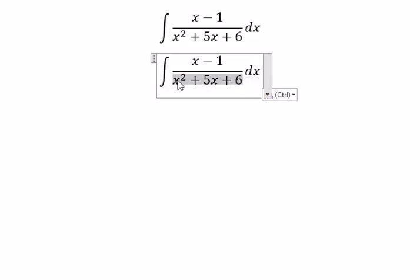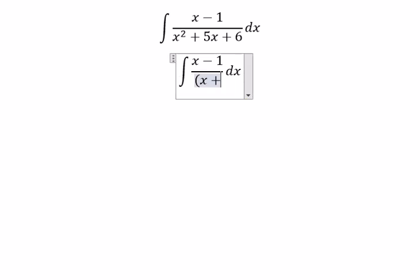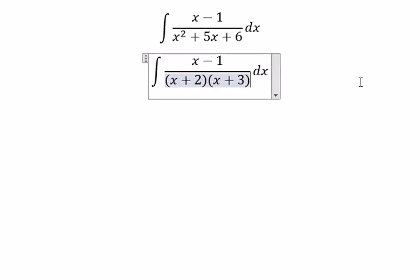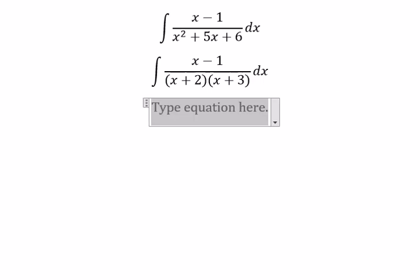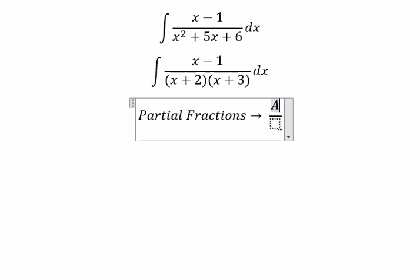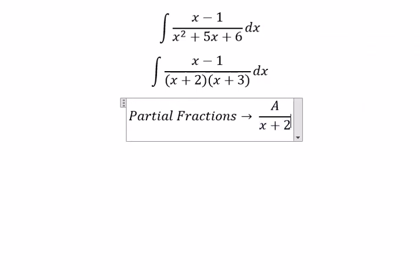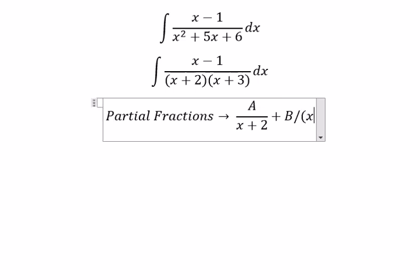We can factor this as x plus 2 multiplied with x plus 3. Then we can use partial fractions. So we have capital A over x plus 2 and capital B over x plus 3.